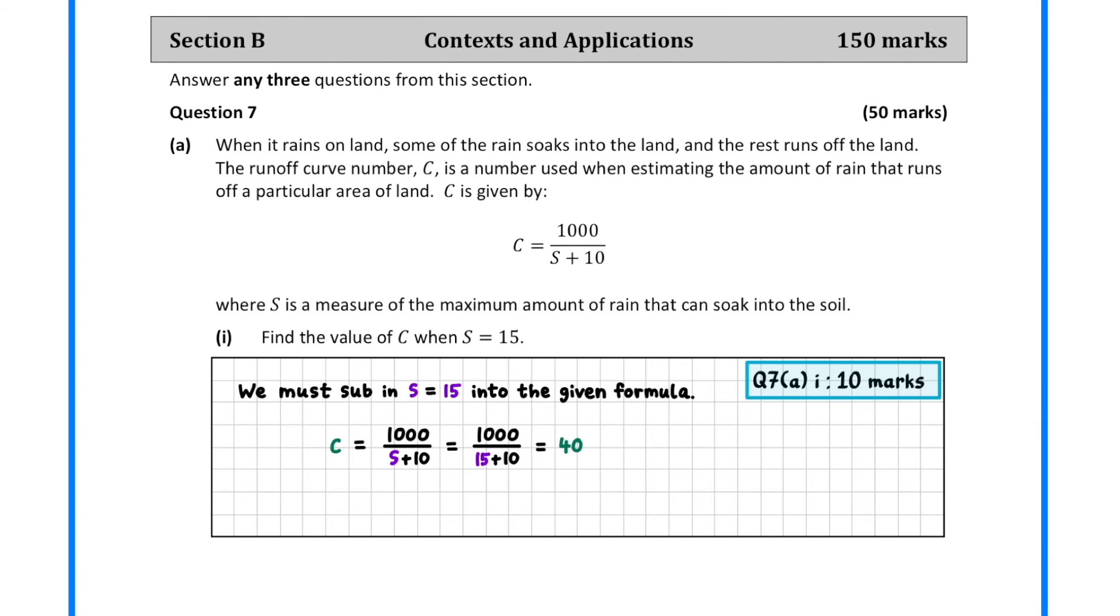In question 7a, we are given a formula which relates the rain runoff C with the maximum amount of soil soakage S. In part 1, we must find the value of C when S equals 15. To do this, we replace the S with 15 in our formula, and then calculate the answer.